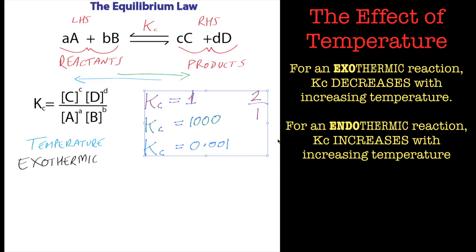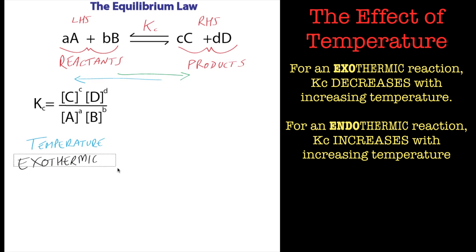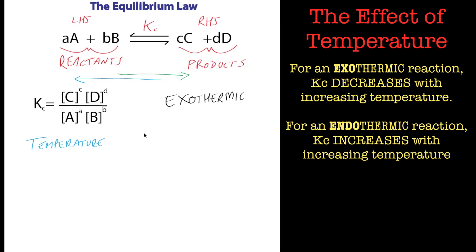For an exothermic process, Kc goes down as temperature goes up. Because the forward reaction already gives off heat, increasing the temperature drives the reaction backwards — this side requires heat to go back. So for exothermic processes, Kc decreases as temperature increases.